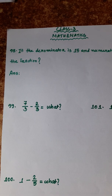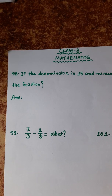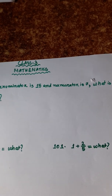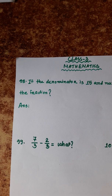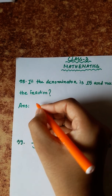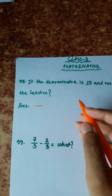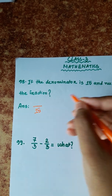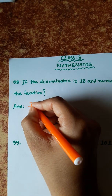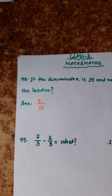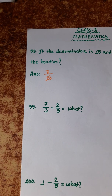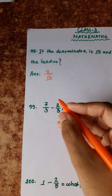Question 98: If the denominator is 15 and the numerator is 7, what is the fraction? We draw the division line — denominator is 15, numerator is 7 — so the fraction is 7/15.